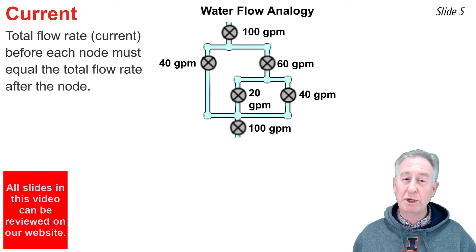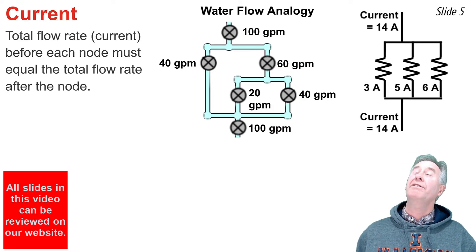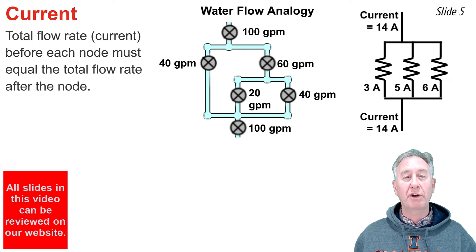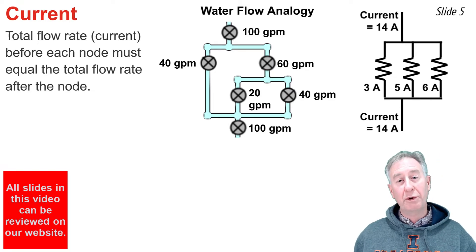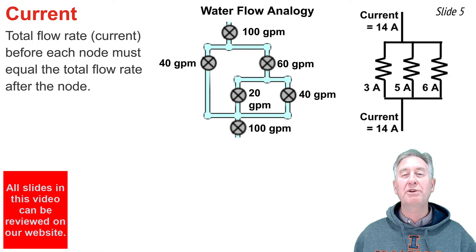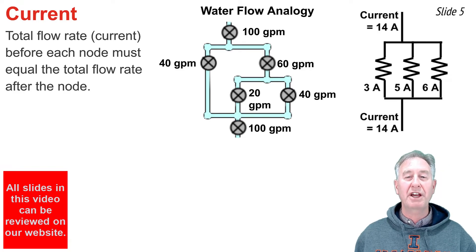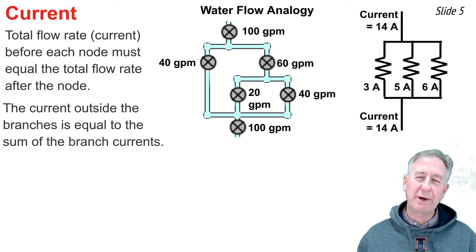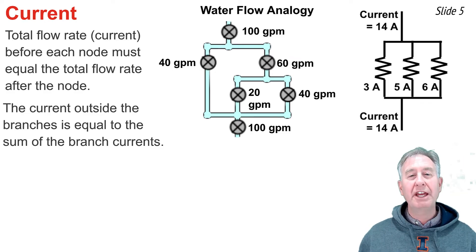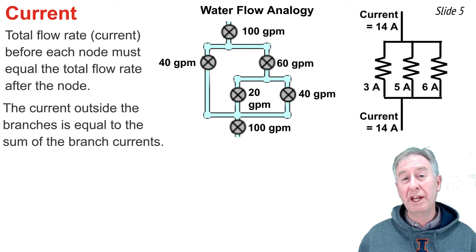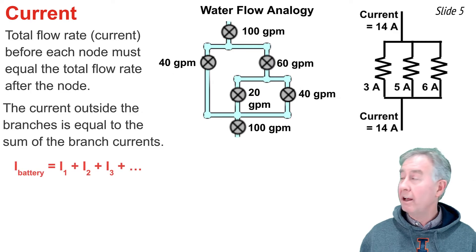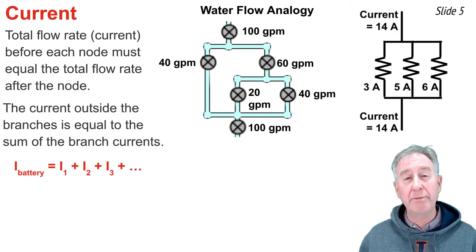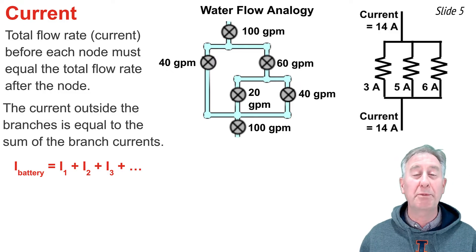It works the same way with charge flow rate, which we call current. In a parallel circuit diagram, 14 amps of current come in and reach the first node, then divide into branches of 3 amps, 5 amps, and 6 amps — totaling 14 amps. The current outside the branches equals the sum of the current inside the branches. As an equation: I_battery = I₁ + I₂ + I₃, where I₁, I₂, and I₃ are the branch currents.